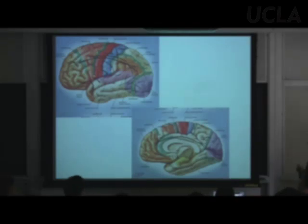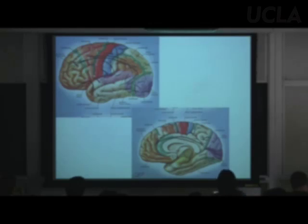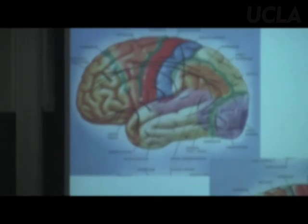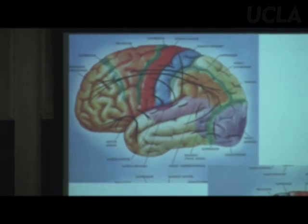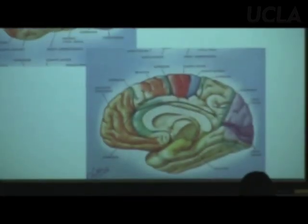There is a representation of your body on the postcentral gyrus called the somatosensory homunculus — 'homunculus' meaning little man. It's disarticulated: legs up top, arm and face to the side. The amount of cortex devoted to each body part is proportional to sensitivity — so there's a huge representation for fingertips and lips, while the back, despite back pain complaints, has very little.